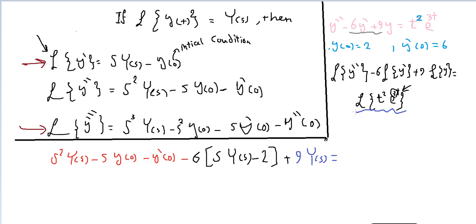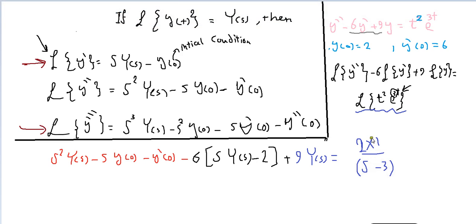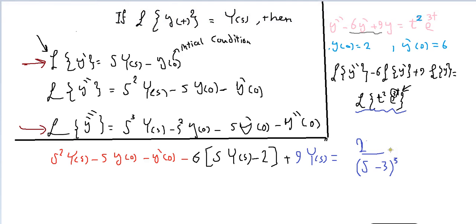For the right-hand side, we have the exponential e^(3t) multiplied by t squared. The Laplace of t squared is 2 factorial over s^(n+1), where n=2, so 2 over s cubed. Then we apply the shift theorem with shift by 3, replacing s with (s−3), giving 2 over (s−3) cubed. We've now computed the Laplace transform of the entire right-hand side. All that remains is to isolate Y(s) on one side.